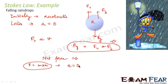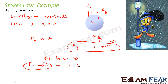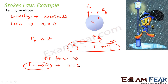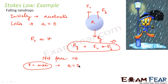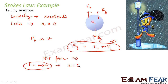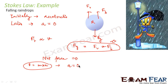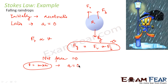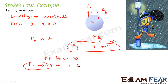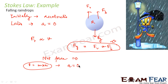So all the raindrops we see initially accelerate — their velocity increases. But as their velocity increases, the retarding force also increases because according to Stokes' Law the retarding force is proportional to velocity. A stage comes when the retarding force equals the gravitational attraction of the earth, the net force becomes zero, acceleration becomes zero, and the body moves with constant velocity.